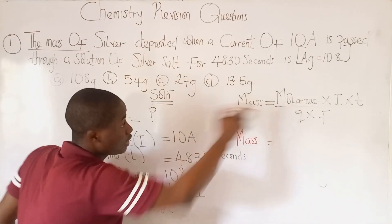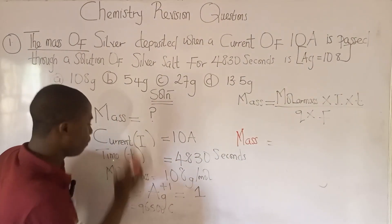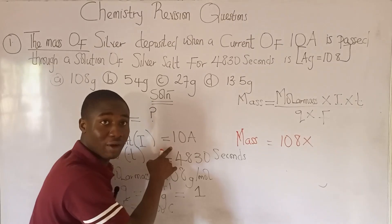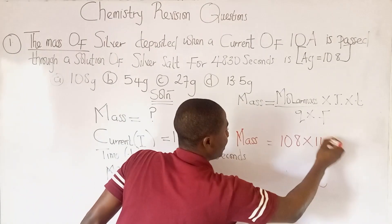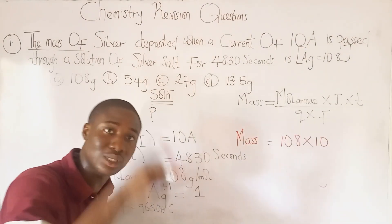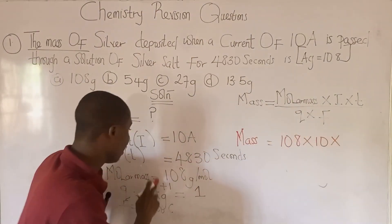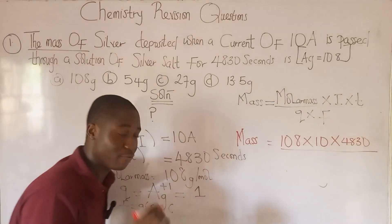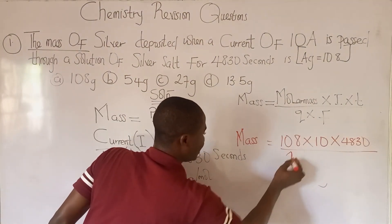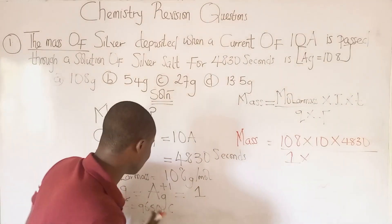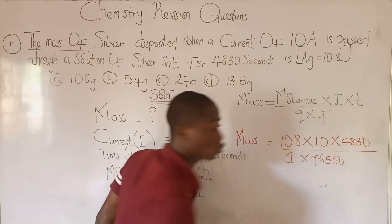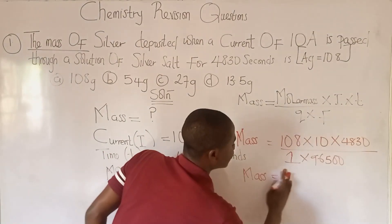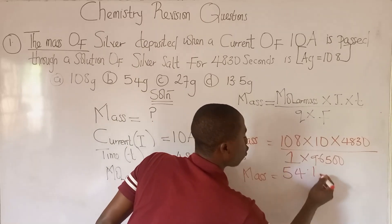Now let's input the parameters into the formula. Molar mass of silver = 108 g/mol, current = 10 amperes, time = 4830 seconds, q for silver = 1, and Faraday's constant = 96500 coulombs. When we calculate all these values, the answer comes out to be 54.1 grams of silver metal.